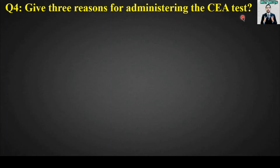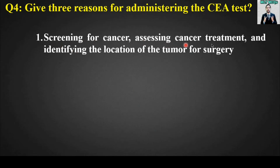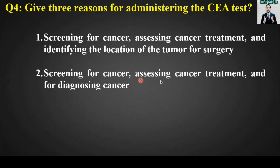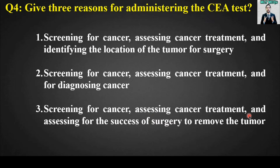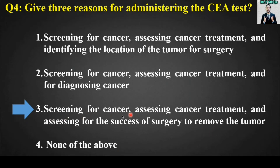MCQ number four: Give three reasons for administering the CEA test. CEA is also called carcinoembryonic antigen. Options include various combinations of screening for cancer, assessing cancer treatment, identifying tumor location, diagnosing cancer, and assessing success of surgery. The right answer is option number three: screening for cancer, assessing cancer treatment, and assessing for the success of surgery to remove the tumor.